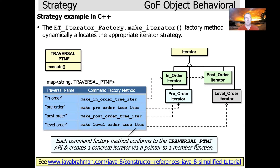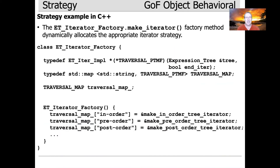I'm going to focus primarily on the make_iterator factory method that's used to dynamically allocate the appropriate iterator strategy. This is very similar to our earlier discussion of factory methods, where we used a clever technique of having a map that maps names to command objects that return implementations — in this case, iterator strategies. Here's the ET iterator factory class, which is the thing used to allocate the given iterator strategy.